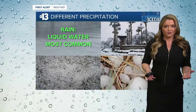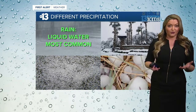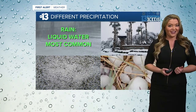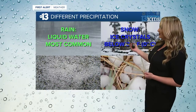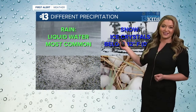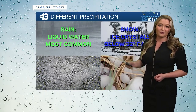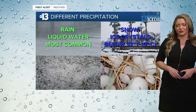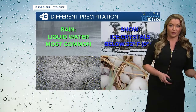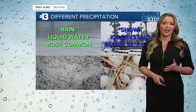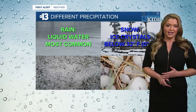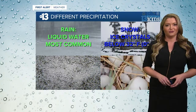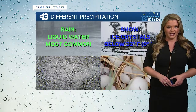But what happens when the air below is colder than 32 degrees Fahrenheit? Well, snow. In snow's case, the water vapor is so cold that it never goes through the liquid state, rather going from vapor directly to an ice crystal that never melts before reaching the ground and accumulating.